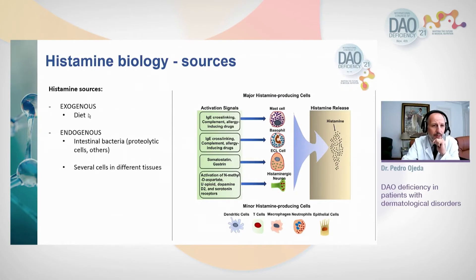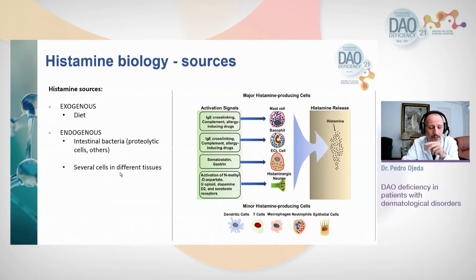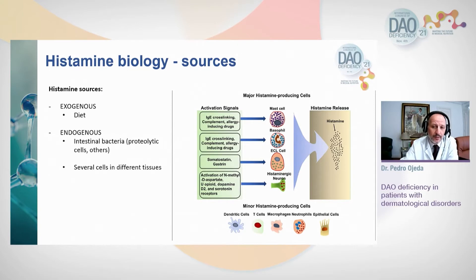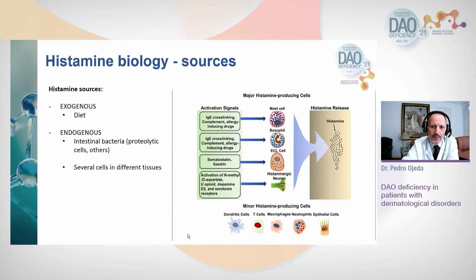Regarding the biology of histamine: the sources of histamine could be exogenous — diet — or endogenous. We need to pay a lot of attention to intestinal microbiota, especially proteolytic bacteria. We also have cells in our organism in different tissues, such as mast cells and other histamine-producing cells, enterochromaffin cells of the stomach, and histaminergic neurons. Other cells like T cells, reticular cells, and neutrophils produce histamine a hundred to a thousand times less.